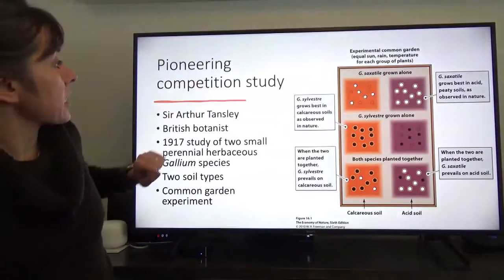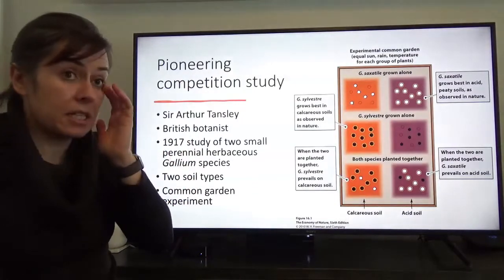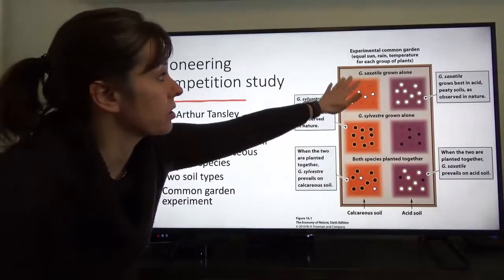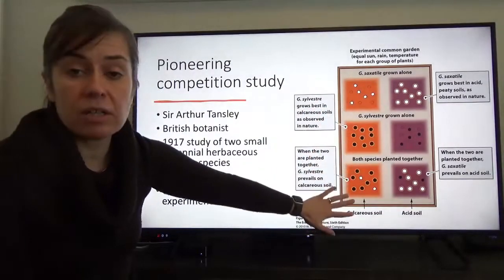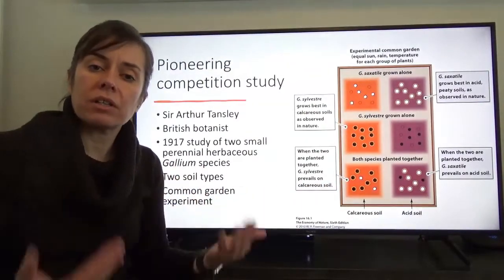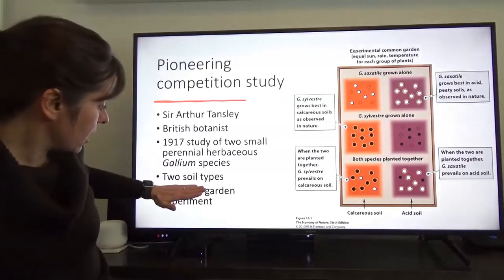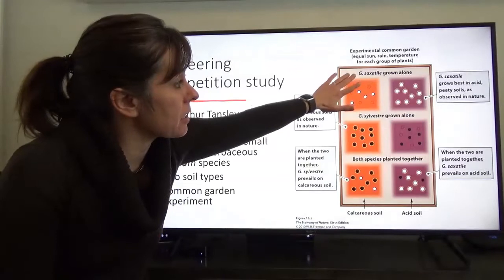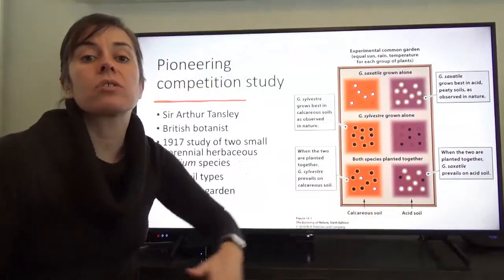One of the very earliest studies of competition was carried out by Sir Arthur Tansley, a British botanist, in 1917. He was interested in studying two species of Galium which occur in nature on different substrates. One tends to occur more in acidic peaty soils, characterized here in purple, and the other in calcareous — more alkaline — soils, characterized here in orange. He conducted a common garden experiment with these two species on both soil types, growing each species alone and together to see how well each performed.